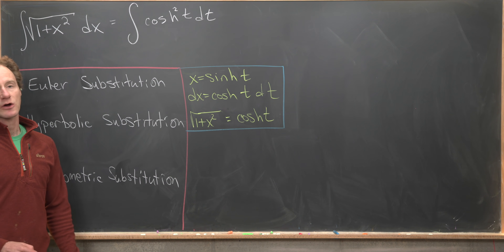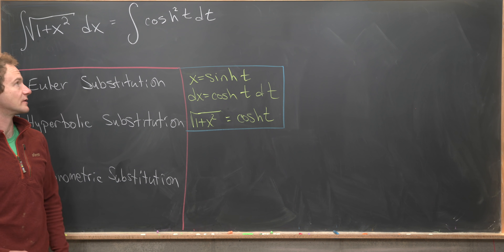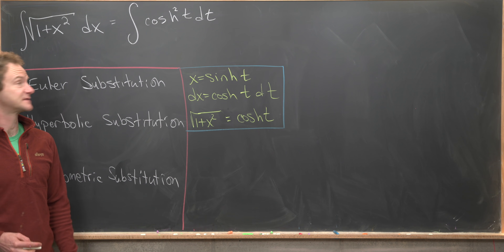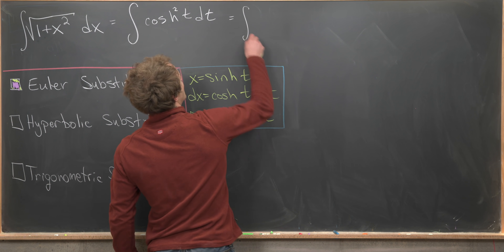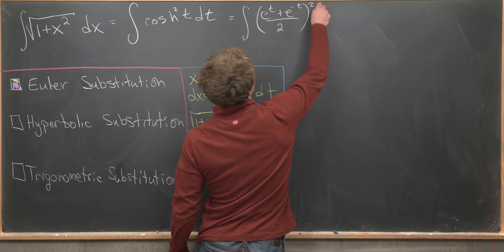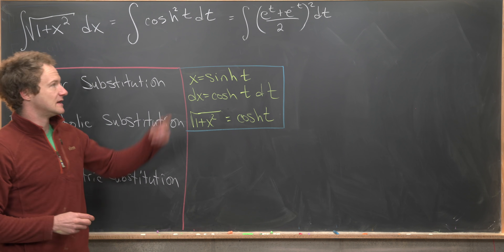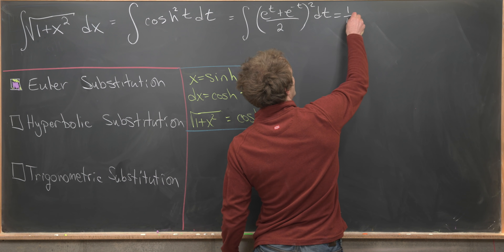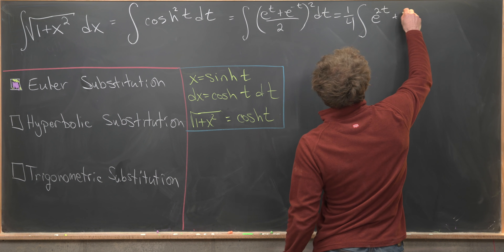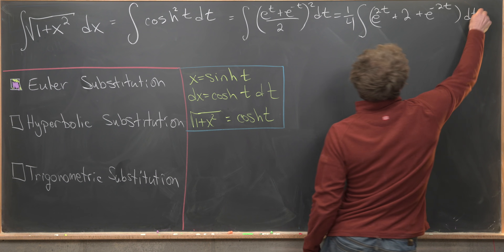There are several ways to proceed, but I want to use the exponential definition of hyperbolic cosine. Writing cosh(t) as (e^t + e^{-t}) / 2 and squaring gives one-fourth times the integral of e^{2t} + 2 + e^{-2t} dt. That's just from foiling and squaring the 2 in the denominator.